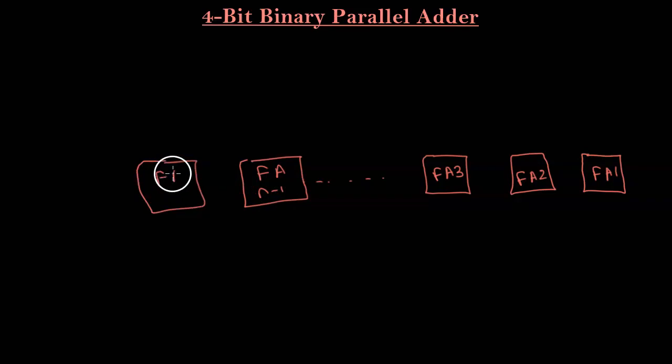So let us first draw the full adder blocks, just the full adder blocks for n times. At least full adder 1, full adder 2, full adder 3. So each full adder is going to be corresponding to each bit. So that means bit 1, bit 2, bit 3, and this is going to be so on for full adder n minus 1, and then the final full adder block for the nth bit.